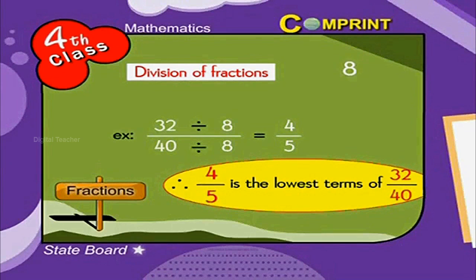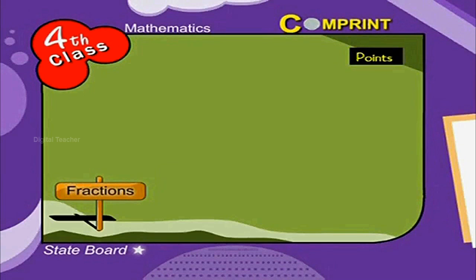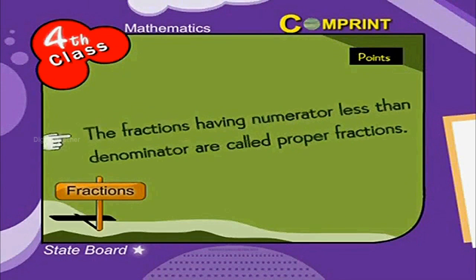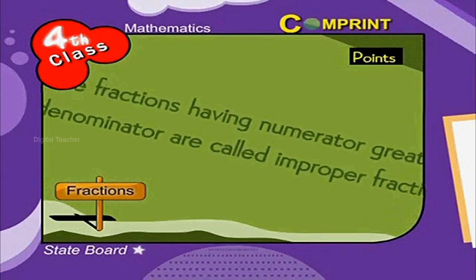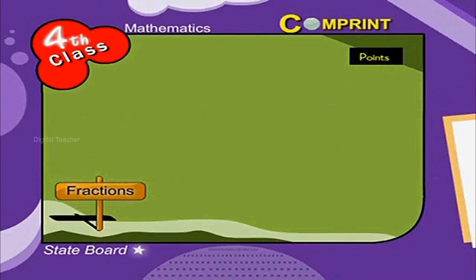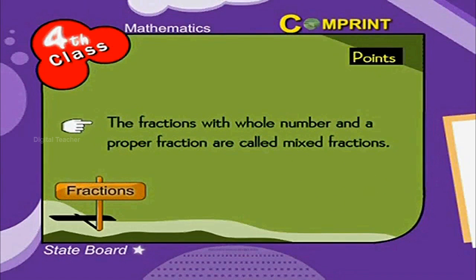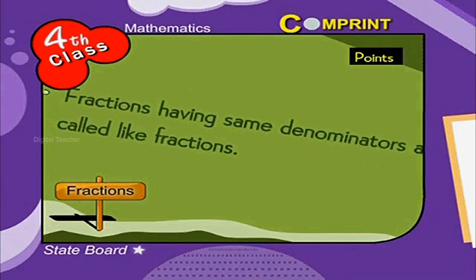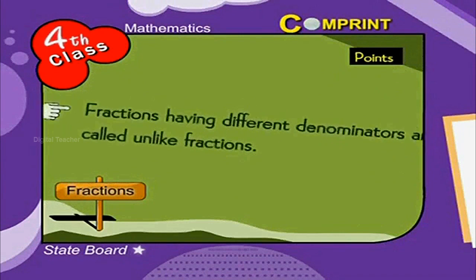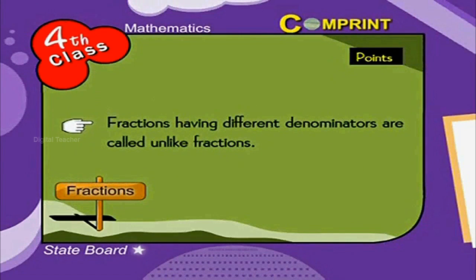Points to remember: Fractions having a numerator less than the denominator are called proper fractions. Fractions having a numerator greater than the denominator are called improper fractions. Fractions with a whole number and a proper fraction are called mixed fractions. Fractions having the same denominator are called like fractions. Fractions having different denominators are called unlike fractions.